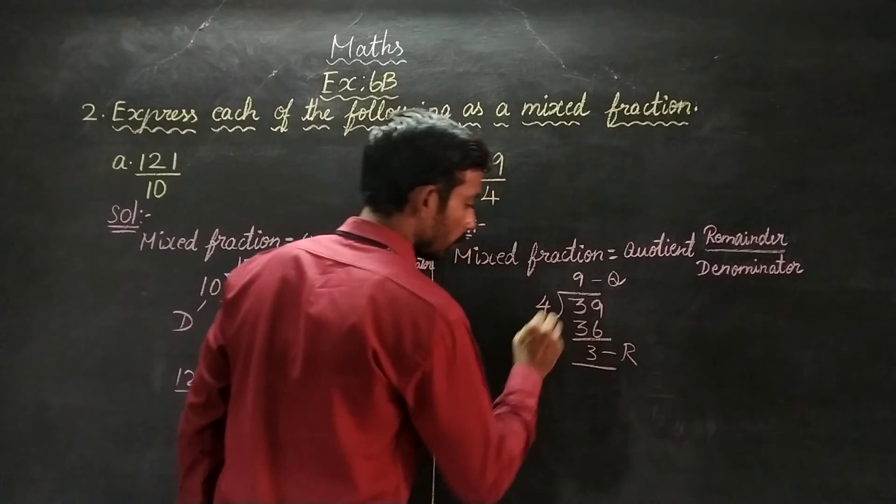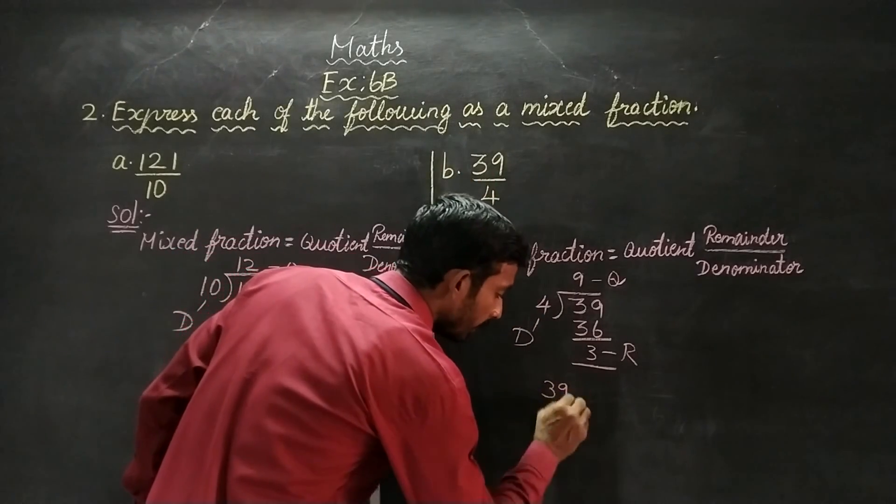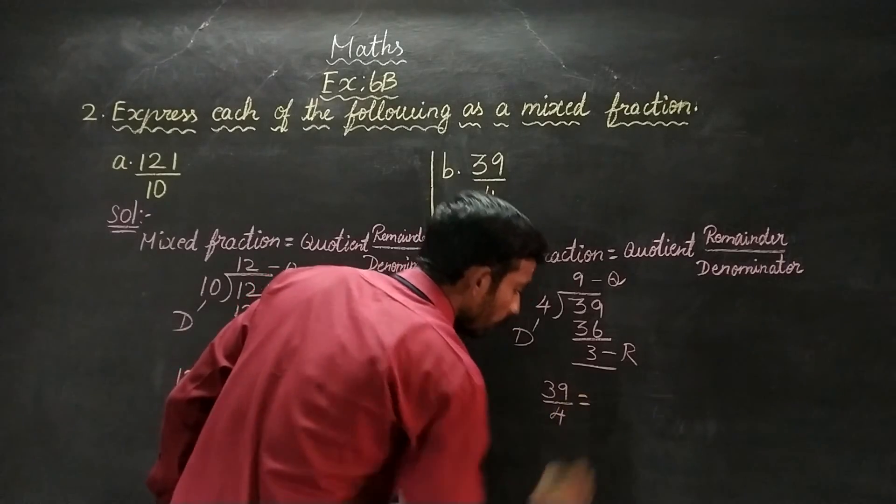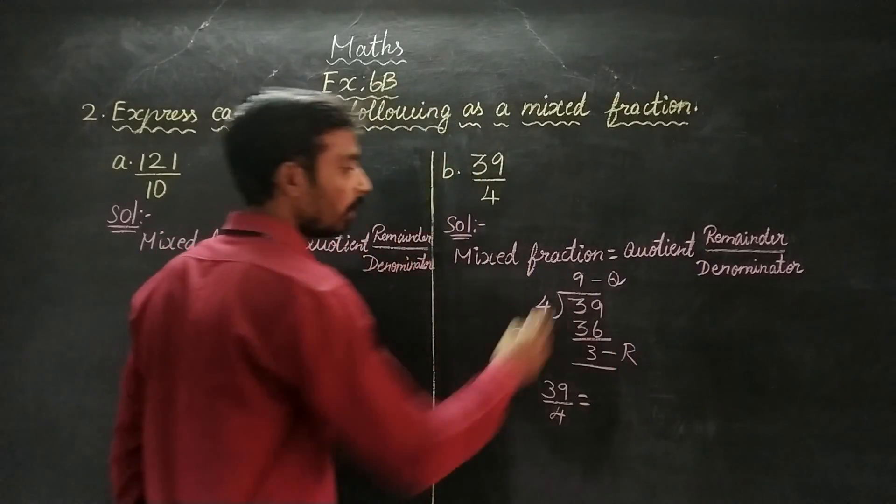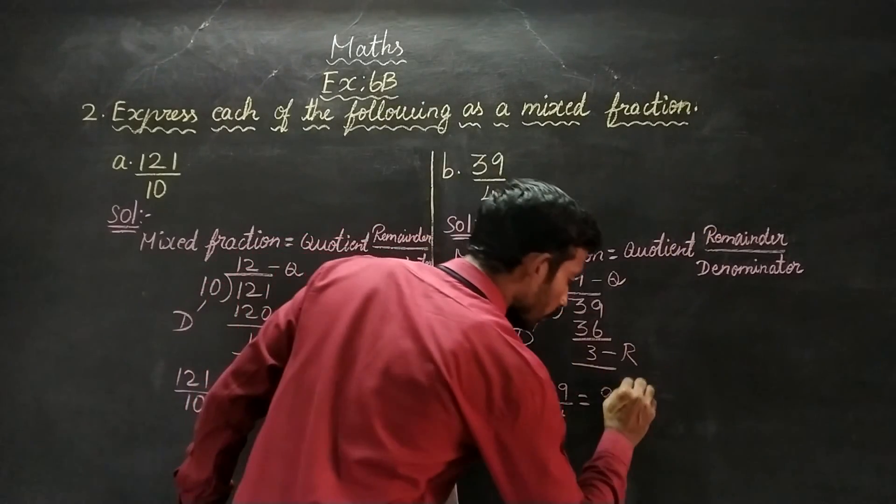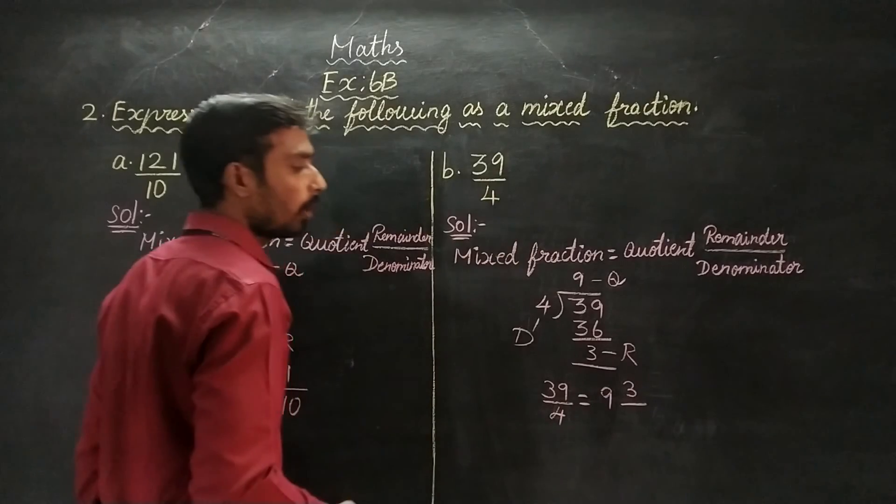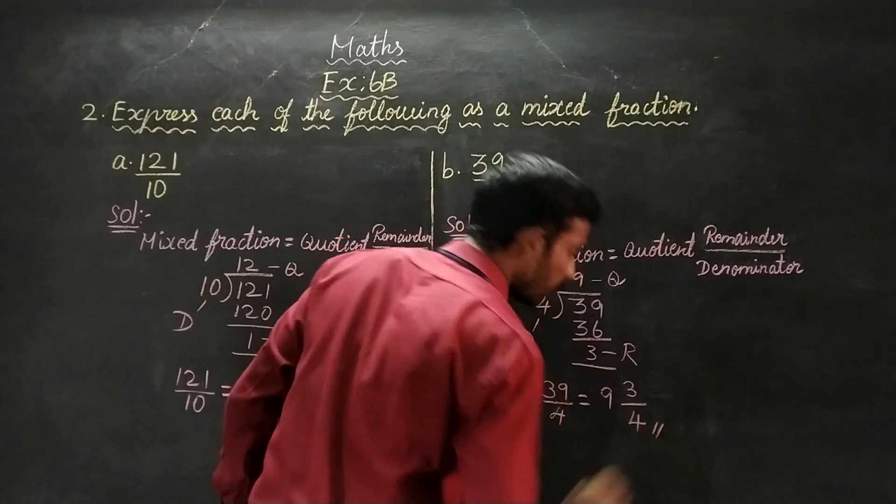39 by 4 as an improper fraction, here we have the mixed fraction. Here we have quotient value 9, remainder value 3, denominator value 4. So 9 and 3 by 4 is the answer.